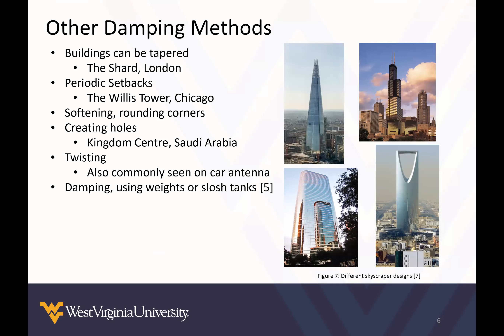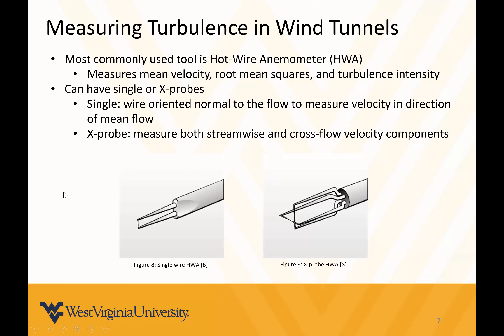For measuring turbulence in wind tunnels, one of the most commonly used methods is a hot wire anemometer. These typically measure mean velocity, root mean squares, and turbulence intensity. There are two basic types: a single probe and an X-probe or cross probe. Single hot wire anemometers are normal to the flow and measure velocity in one direction — the direction of the mean flow. Cross probes measure both the streamwise and cross-flow velocity components.